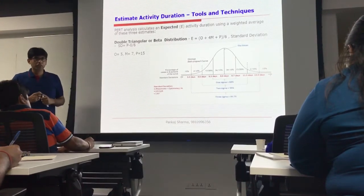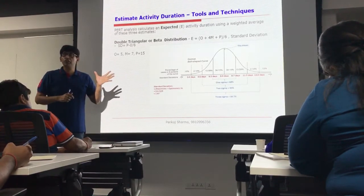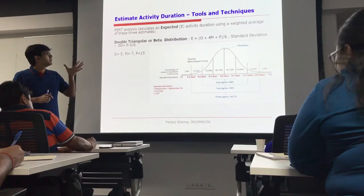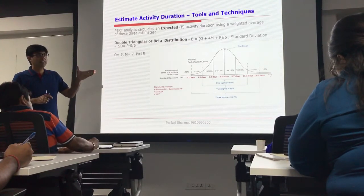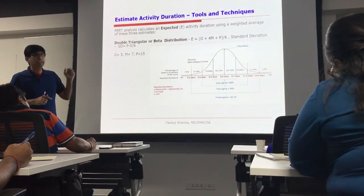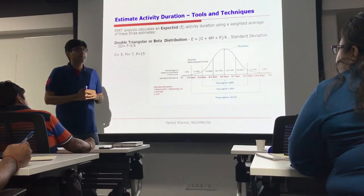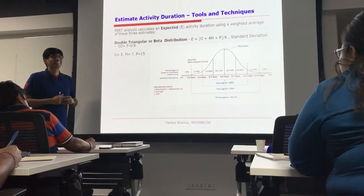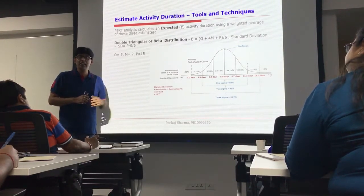Simple mathematics. What is the value of optimistic? 5. Plus 4 times most likely — most likely is 7, so 4 times 7 is 28. So this is 5 plus 28. Plus pessimistic, which is 15. So we have 5 plus 28 plus 15, which is 48. 48 divided by 6 — so what is the expected time? 8. Expected time is 8 days.